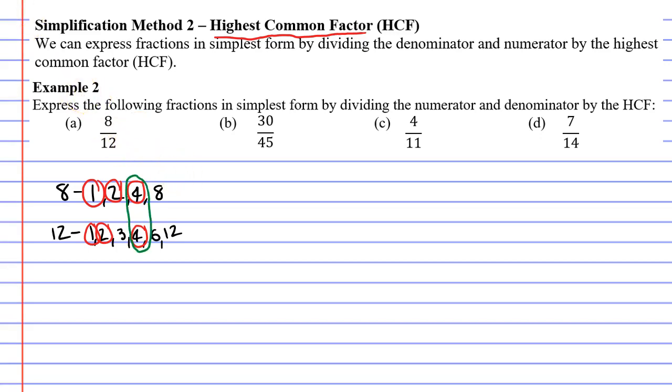Once you've done that, you now know what you need to divide your fraction by. We need to divide by 4. We need to divide the 8 by 4, as well as the 12 by 4. You always divide the top and bottom by the same number. 8 divided by 4 is 2, and 12 divided by 4 is 3.